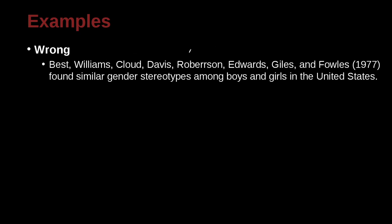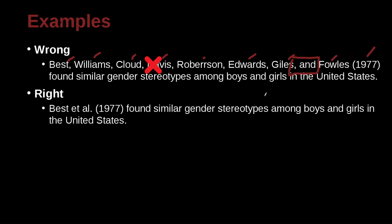Best, Williams, Cloud, Davis, Roberson, Edwards, Guile, and Fowles (1977) found similar gender stereotypes among boys and girls in the United States. That's eight authors. It looks good that we have a comma and 'and' with the year. But the problem is there are too many authors. Remember: for three or more you use 'et al.' But the first time, must you use the actual full list? No — if there are seven or more authors, we go ahead and use 'et al.' the very first time. And that's what we've done here — even though it's the first time, we use 'et al.'